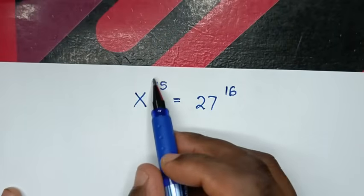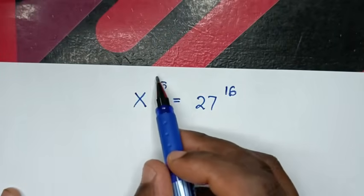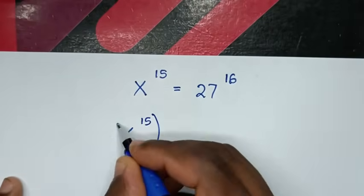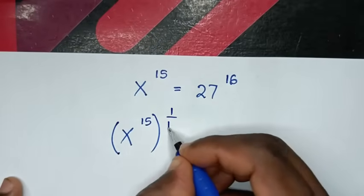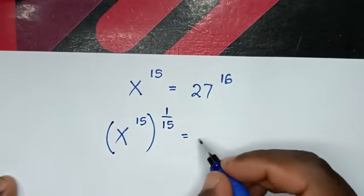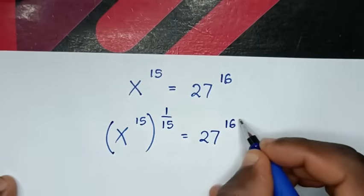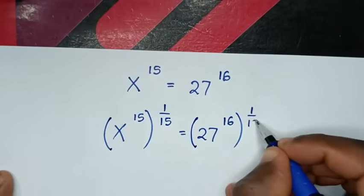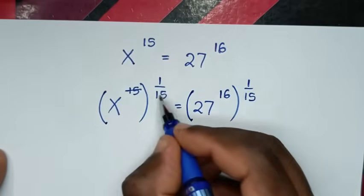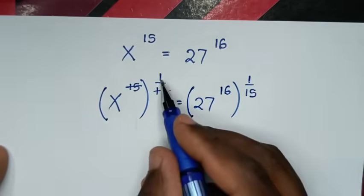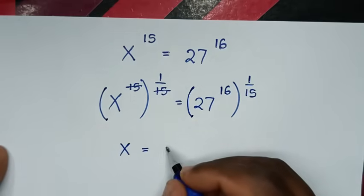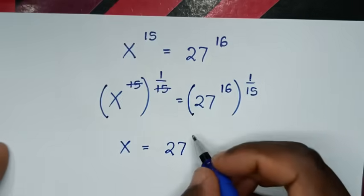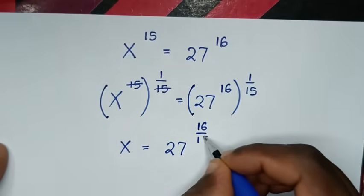To get x, we multiply by a reciprocal of 15, which is power of 1 over 15. So it will be x to the power of 15, bracket multiplied by power of 1 over 15, is equal to 27 to the power of 16, bracket multiplied by power of 1 over 15. So these cancel, so x to the power of 1 — it is x — is equal to 27 to the power of 16 times 1 over 15, which is 16 over 15.